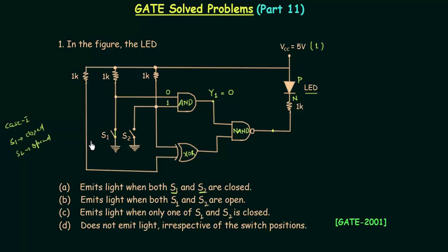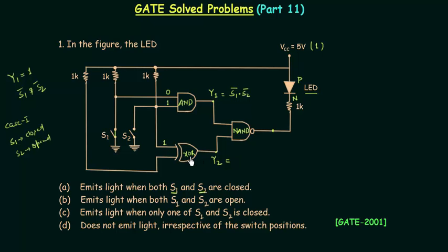Analyzing all four cases, to make Y1 equal to 1, both switches S1 and S2 must be open. So the output Y1 = S1' · S2' (S1 complement AND S2 complement). Now for the XOR gate output Y2: the first input is always connected to VCC (equal to 1) and the second input is also connected to VCC (equal to 1). In an XOR gate, when both inputs are 1, the output is 0. So Y2 = 0.